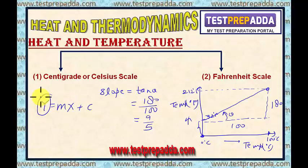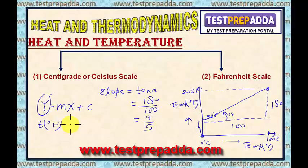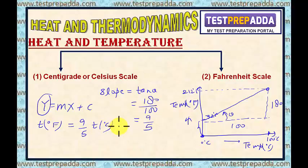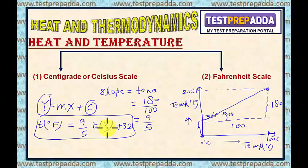Since this is a straight line, I can write Y = MX + C, where Y is temperature in degree Fahrenheit, M (slope) is 9/5, X is temperature in degree Celsius, and C (the Y-intercept) is 32. So the relation is: temperature in °F = (9/5) × temperature in °C + 32. This relation is used for interconversion between degree Fahrenheit and degree Celsius.